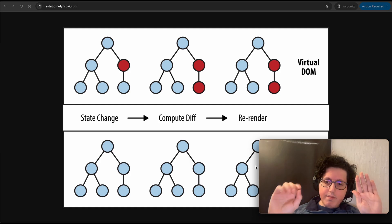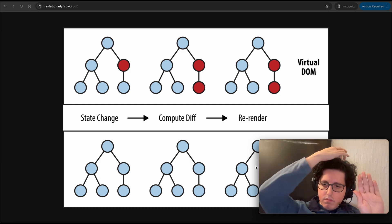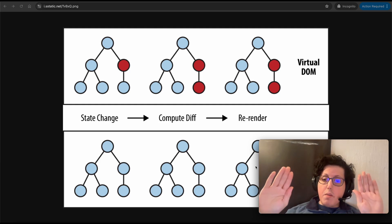Through a method called reconciliation - this is a very important word in React - through reconciliation, it checks which node of your Document Object Model you changed, and it re-renders only that part of your DOM.